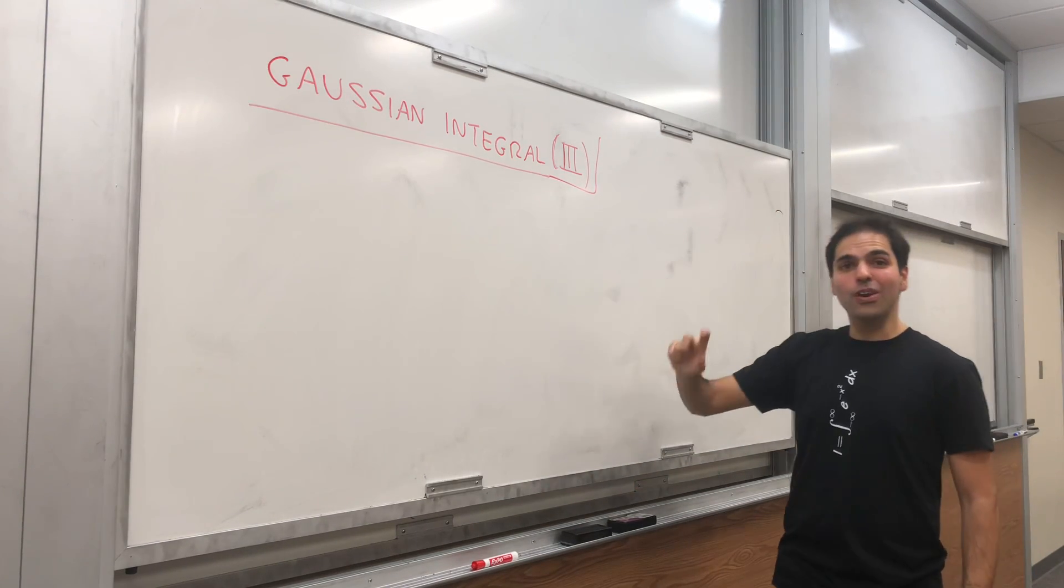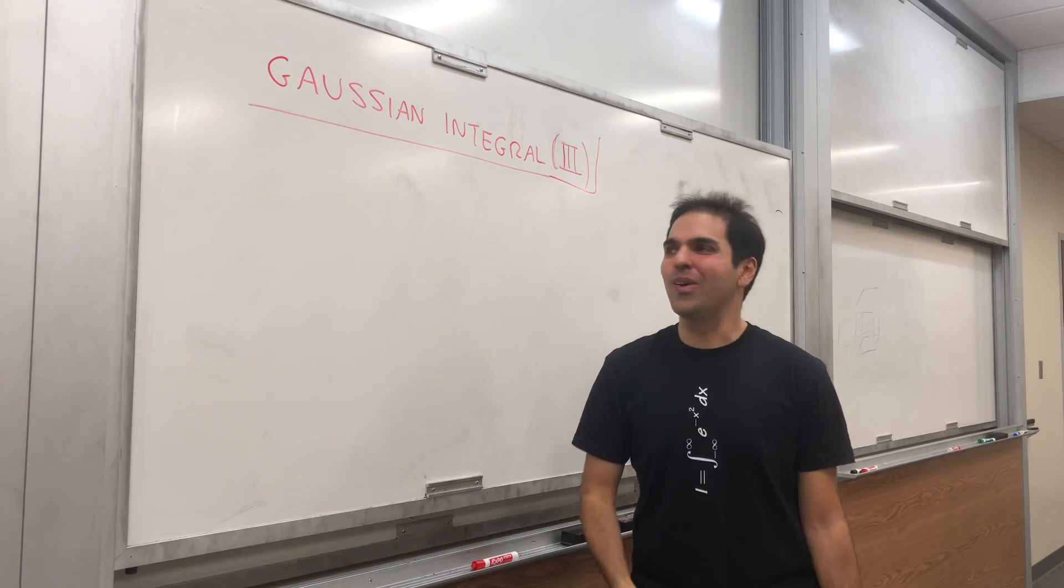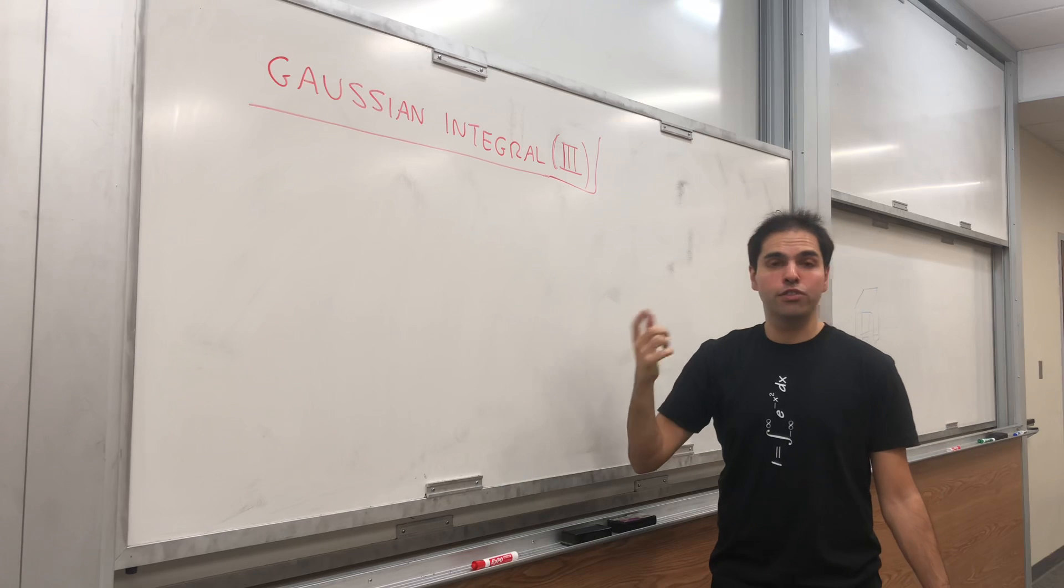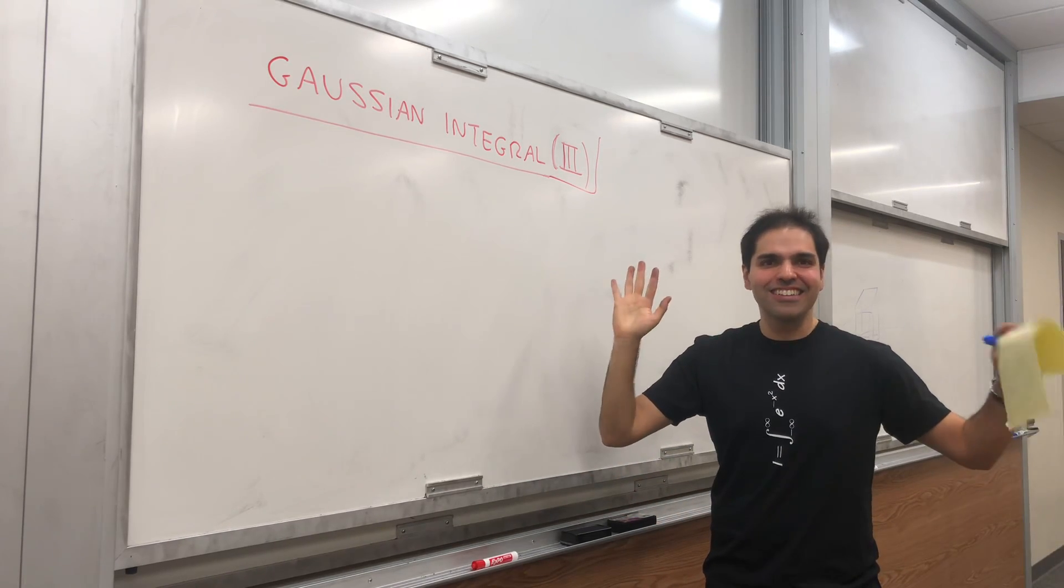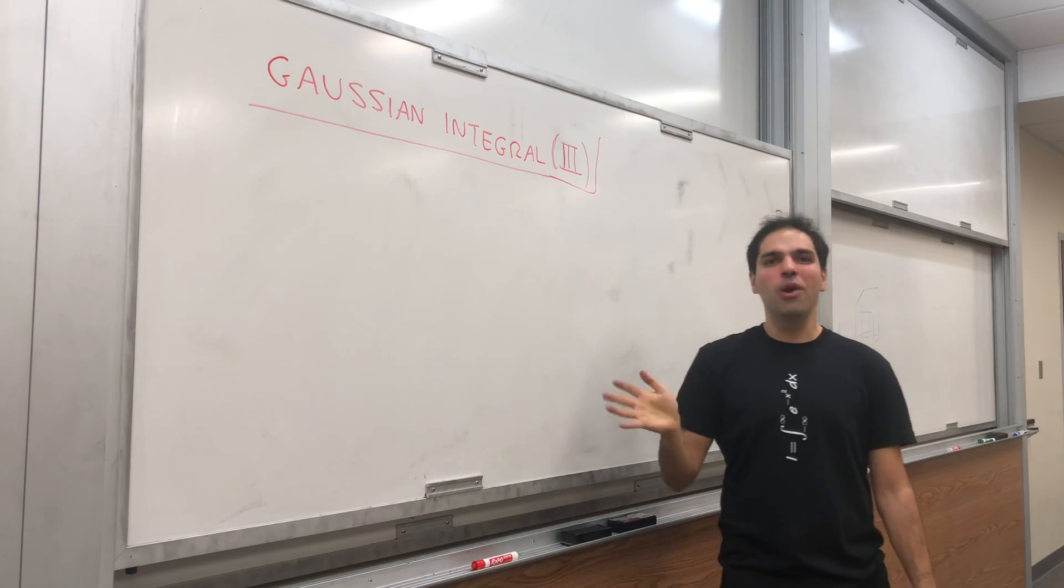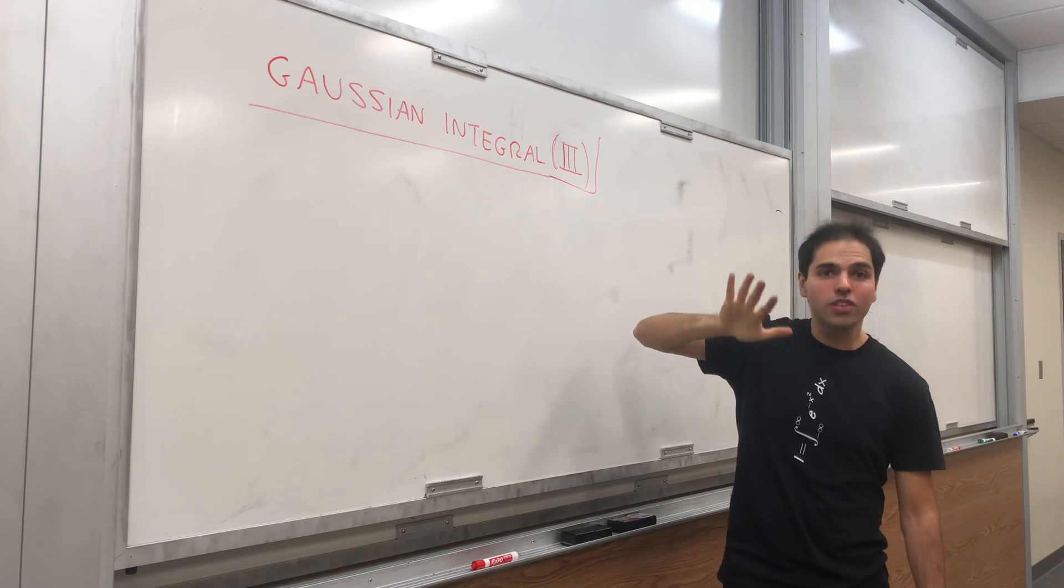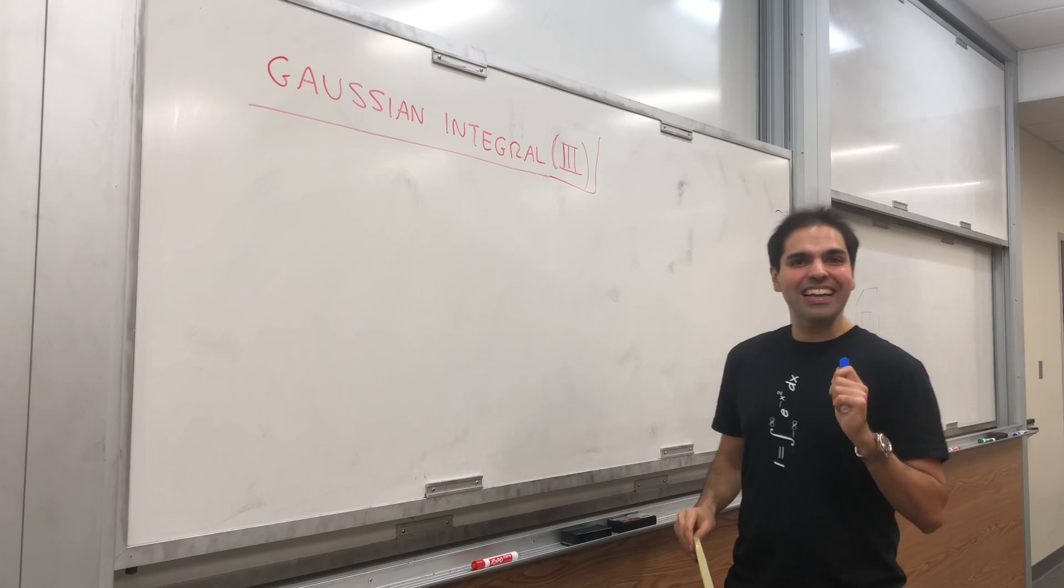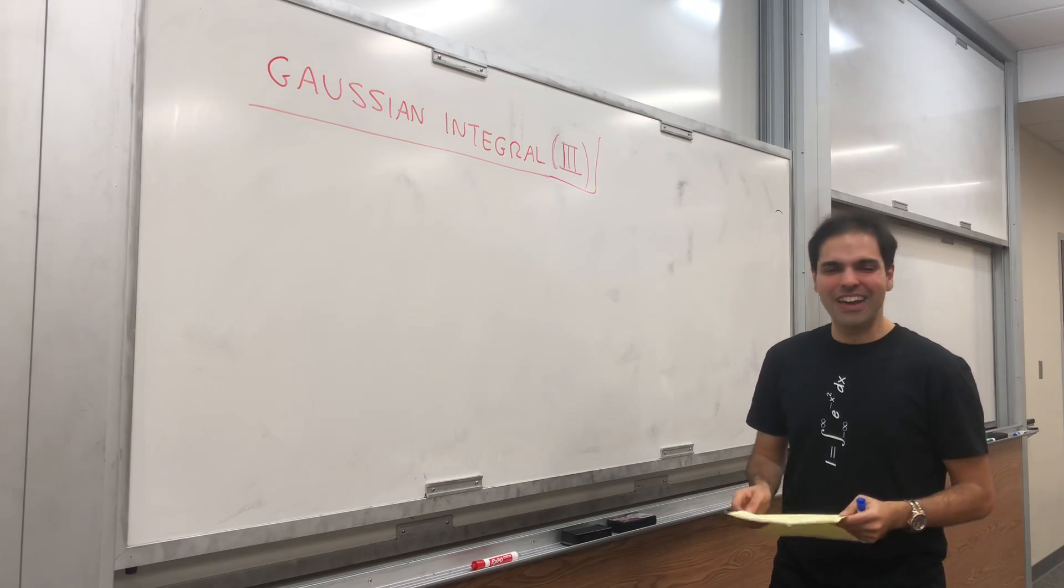Thanks for watching and welcome to our third way of evaluating the Gaussian integral. This way is very neat because it involves pure calculus. No multivariable calculus at all, I promise. I know for the second one I said no multi, but I used it a little bit. This one just uses ordinary single integrals. And again I would like to thank Keith Conrad for coming up with those ideas. Those are very cool.